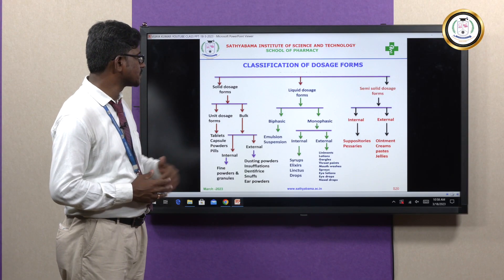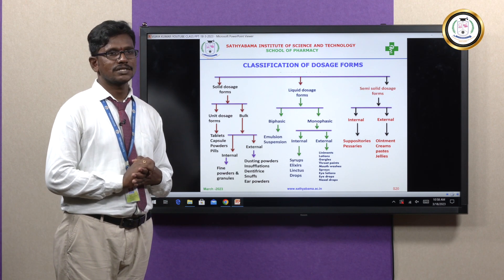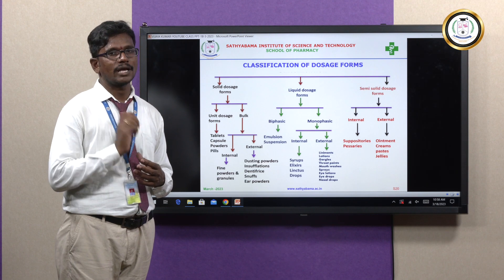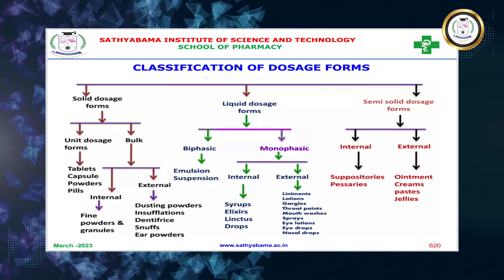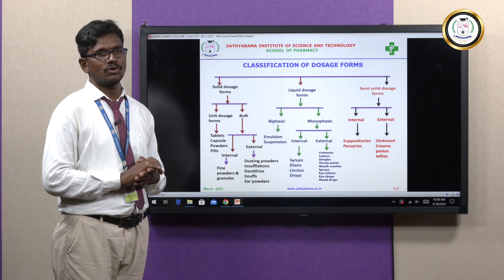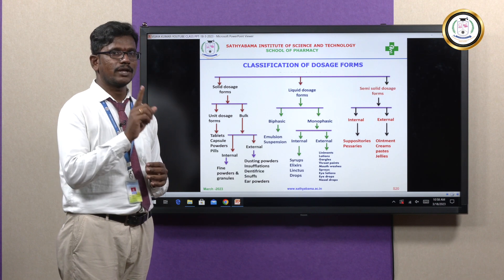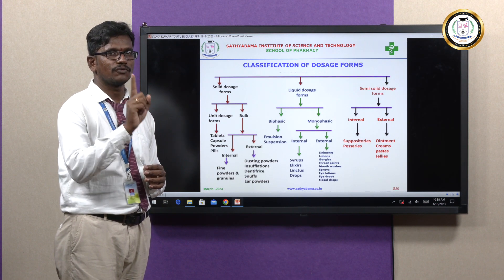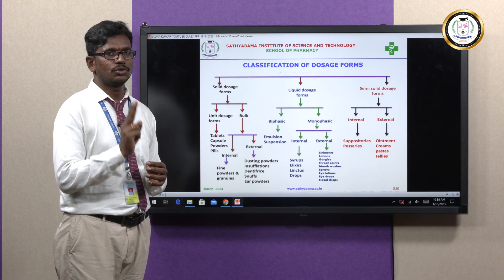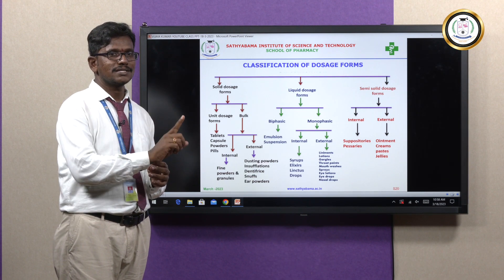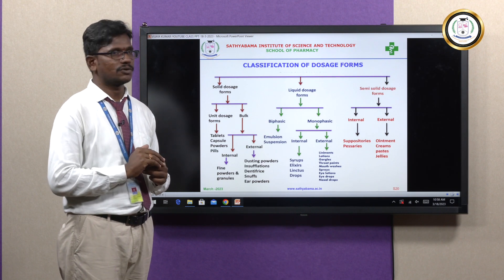That is all about the solid dosage form. Coming to liquid dosage forms, there are two types: monophasic liquid dosage form and biphasic liquid dosage form. Monophasic means one phase is there. Biphasic means two phases — one phase is dispersed into another phase, and that is called the biphasic liquid dosage form.